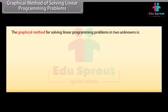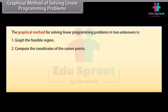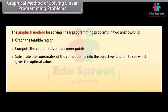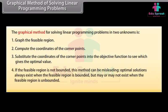The graphical method for solving linear programming problems in two unknowns: 1. Graph the feasible region. 2. Compute the coordinates of the corner points. 3. Substitute the coordinates of the corner points into the objective function to see which gives the optimal value. 4. If the feasible region is not bounded, this method can be misleading. Optimal solutions always exist when the feasible region is bounded, but may or may not exist when the feasible region is unbounded.